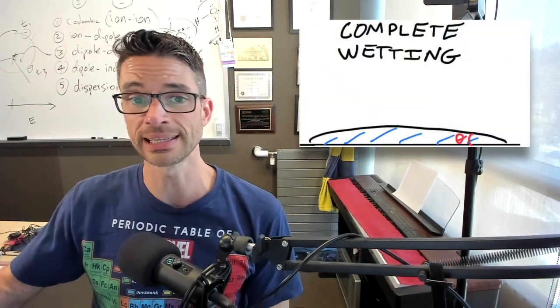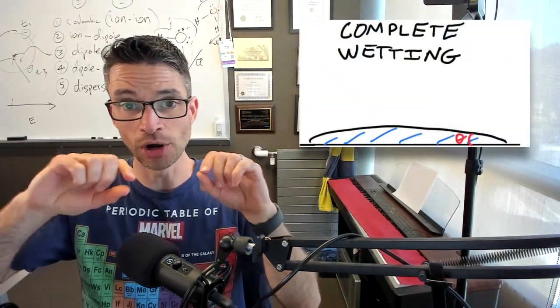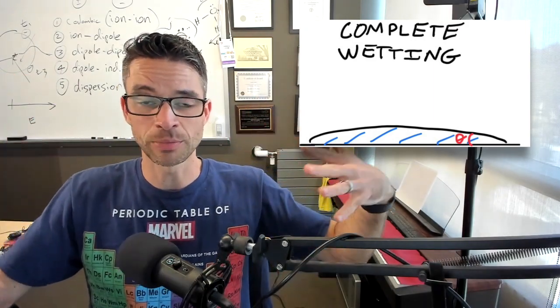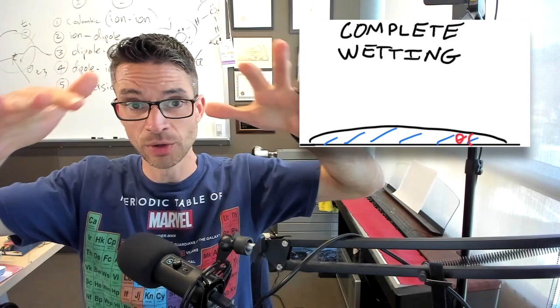So when you have Rain-X on your car windshield, you can have scenarios of complete wetting, which is if you have a completely clean glass surface, you have a lot of SiOH groups that are very polar. Those interact by dipole-dipole forces with water, and the water spreads out.